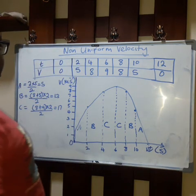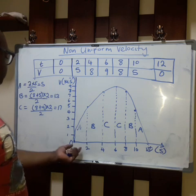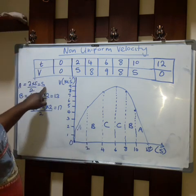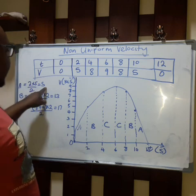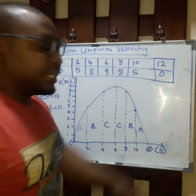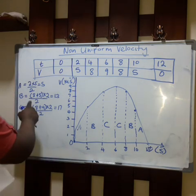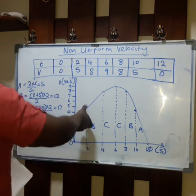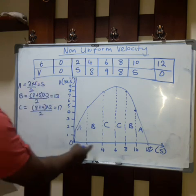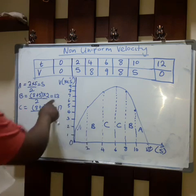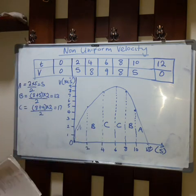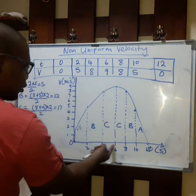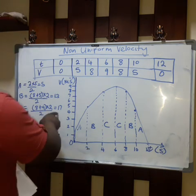For A, since it is a triangle, the base is 2 (from 0 to 2) and the height is 5, so base times height divided by 2 gives 5. For B, it's a trapezium: the longer side is 8, the shorter side is 5, so (8 + 5) multiplied by the height of 2, then divided by 2, gives 13. For C, it's a trapezium: the longer side is 9, the shorter side is 8, so (8 + 9) multiplied by 2, divided by 2, gives 17.